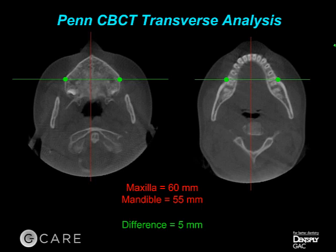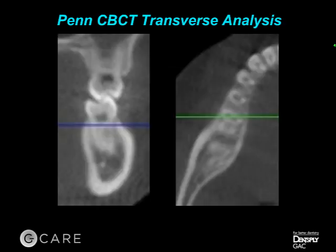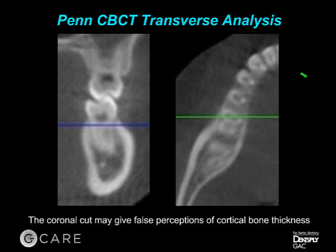The reason we used the axial cut is that the mandible is tapered. If you take a vertical slice through a tapered mandible, the width of the cortical bone is going to be distorted — it looks much thicker on the frontal cut than it does on the axial cut. In order to prevent false measurements, this is the reason we use the axial cut when we use the CBCT analysis.